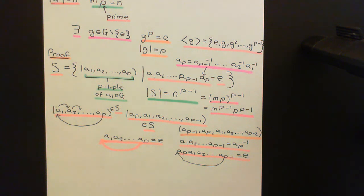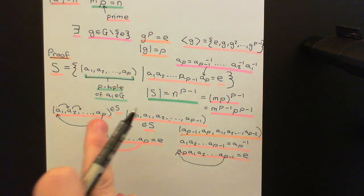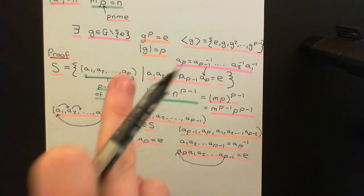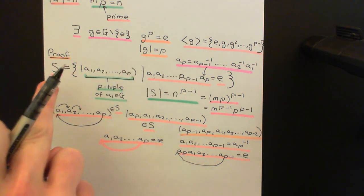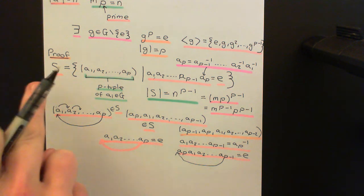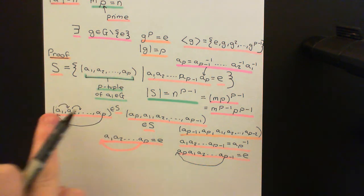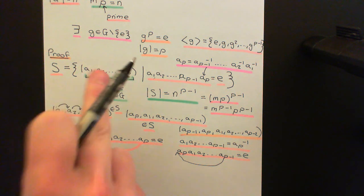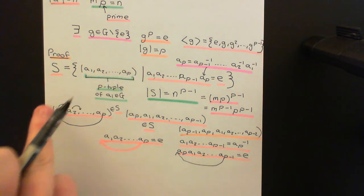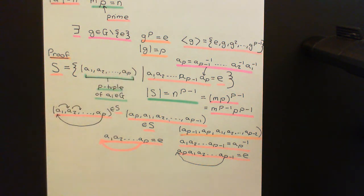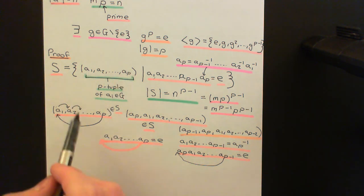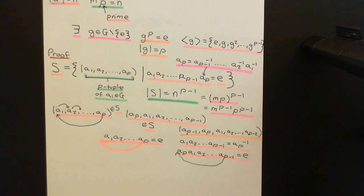We'll have a break here, and in the next video we will define the group action on this set — a group action by the cyclic group of p elements on S, where an element of the cyclic group acts by moving the entries of a p-tuple along by the corresponding amount.